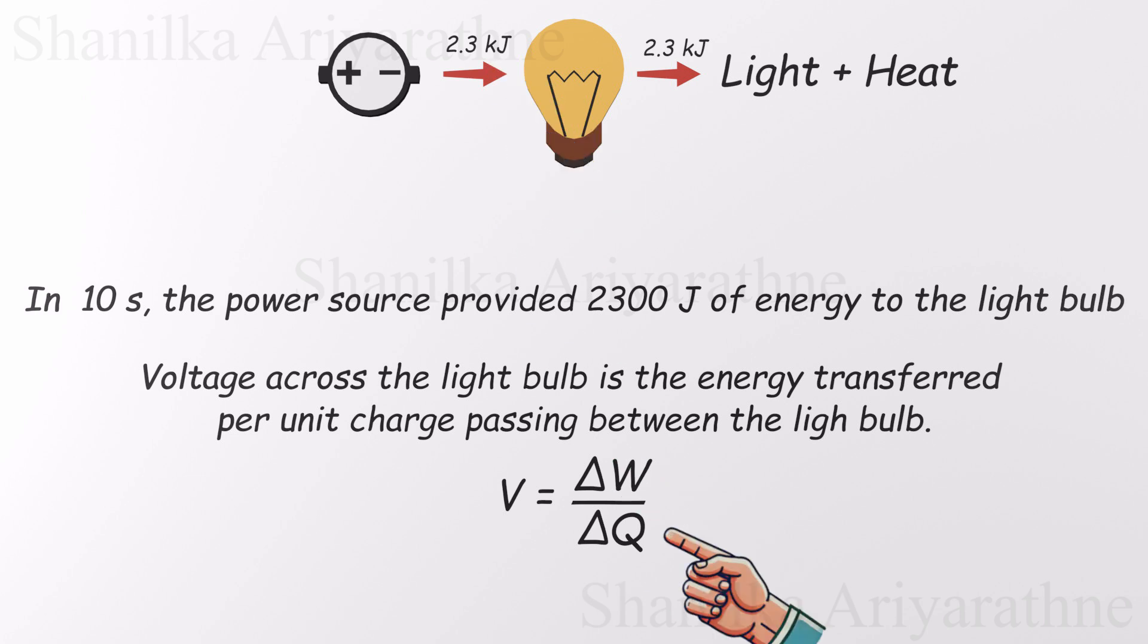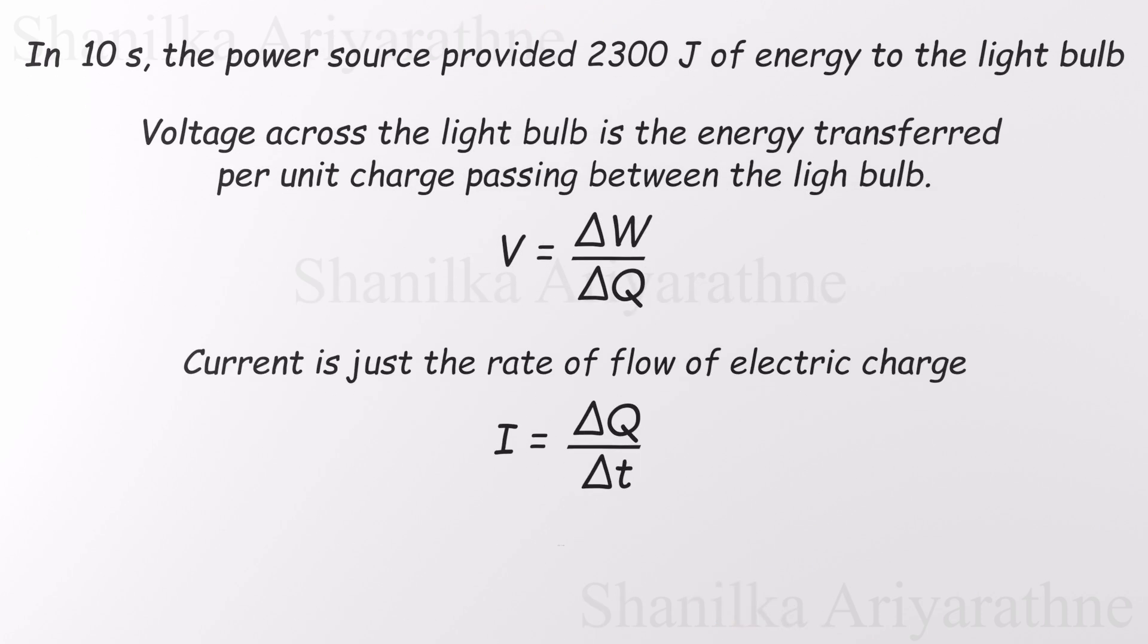But we don't yet know how many charges were involved in doing that work. That's where current comes in. Remember, current is just the rate at which electric charge flows. And since we know both the current and the time, we can figure out how much total charge passed through the circuit during those 10 seconds.